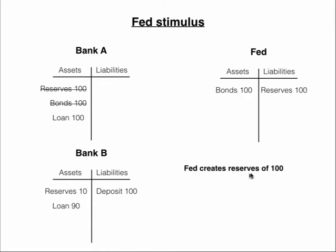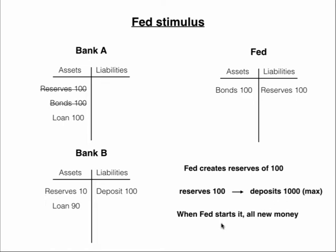The Fed is creating reserves out of nothing, starting the process by buying up bonds and creating bank reserves. Those $100 in reserves can support up to $1,000 in deposits if we have the full money multiplier. Whenever the Fed starts this process using expansionary monetary policy, this is all new money — the $100 that was originally created as bank reserves is new money, and then all of the money multiplied on top of that, the whole $1,000. We're assuming people are staying in deposits, so the money supply is completely in deposits, and that $1,000 is all new money started by that open market purchase by the Fed.